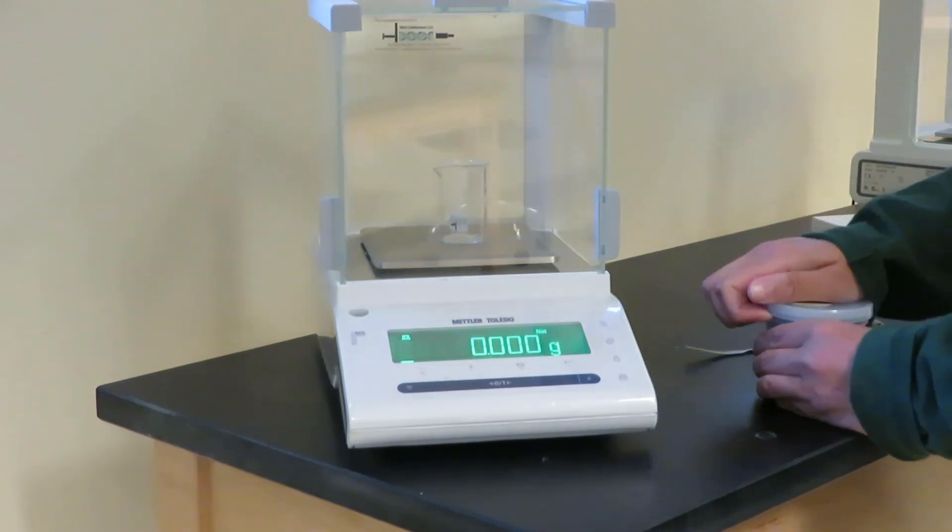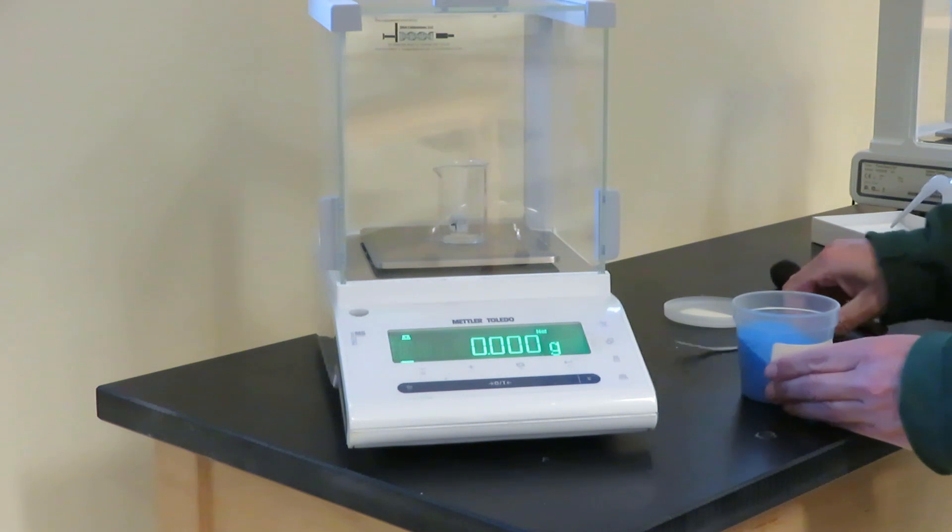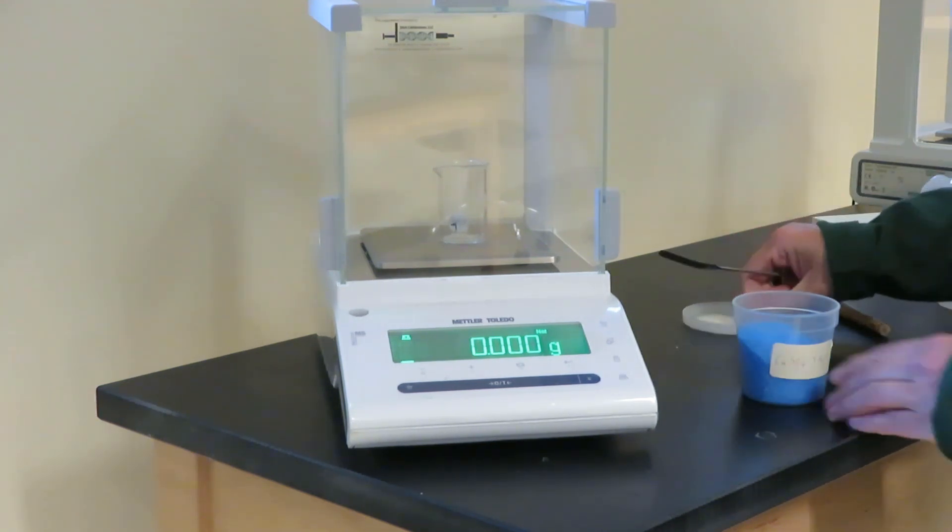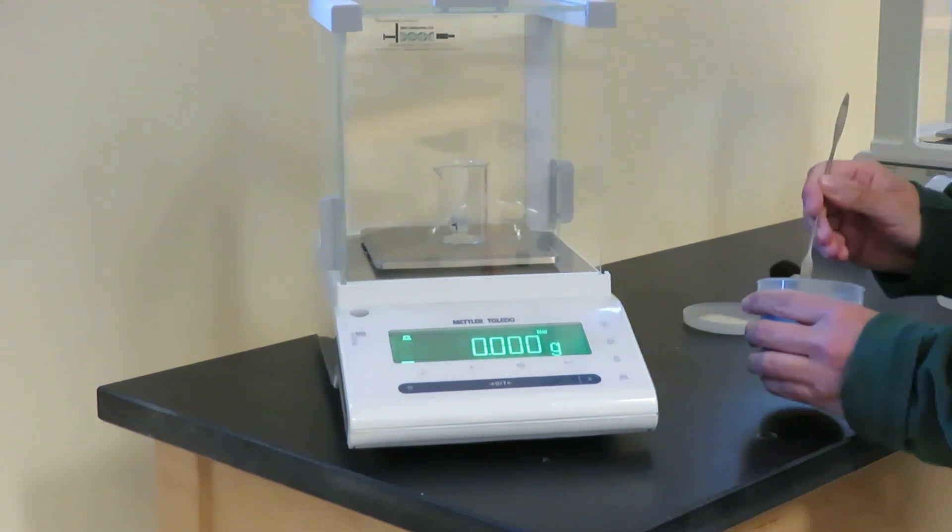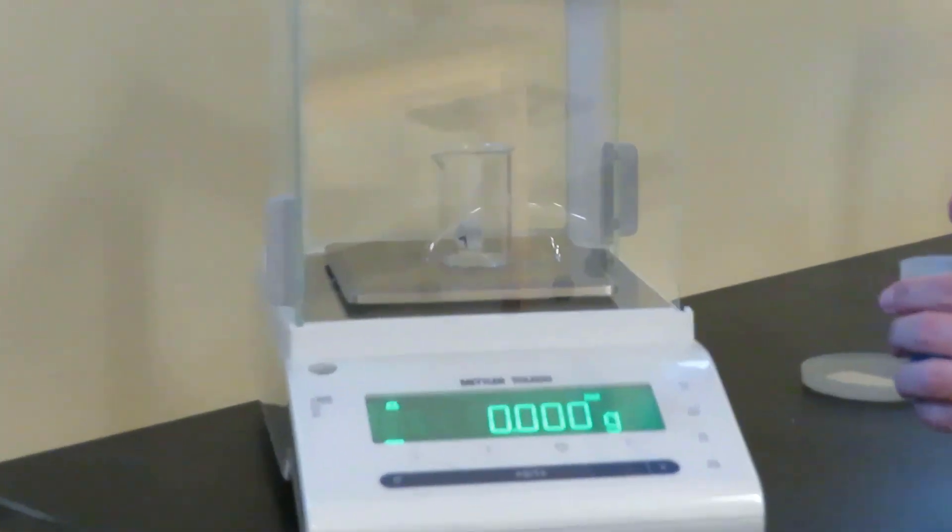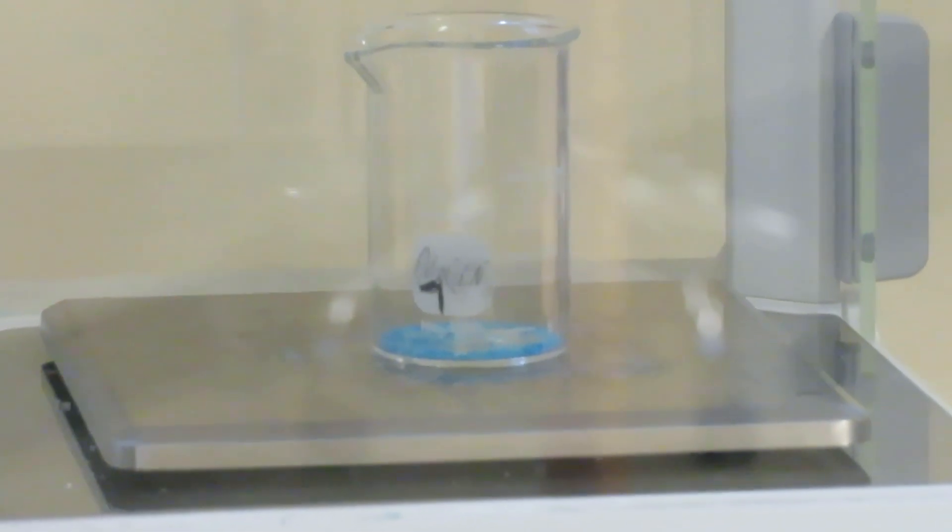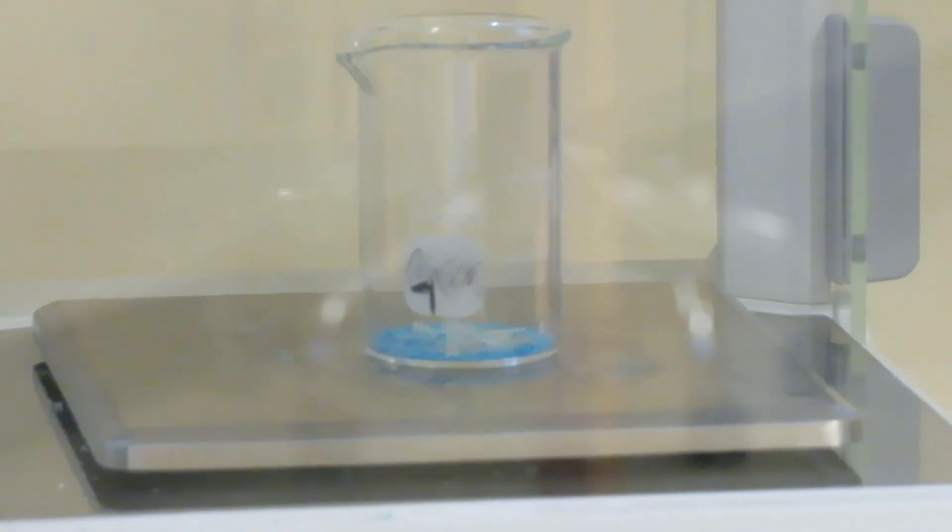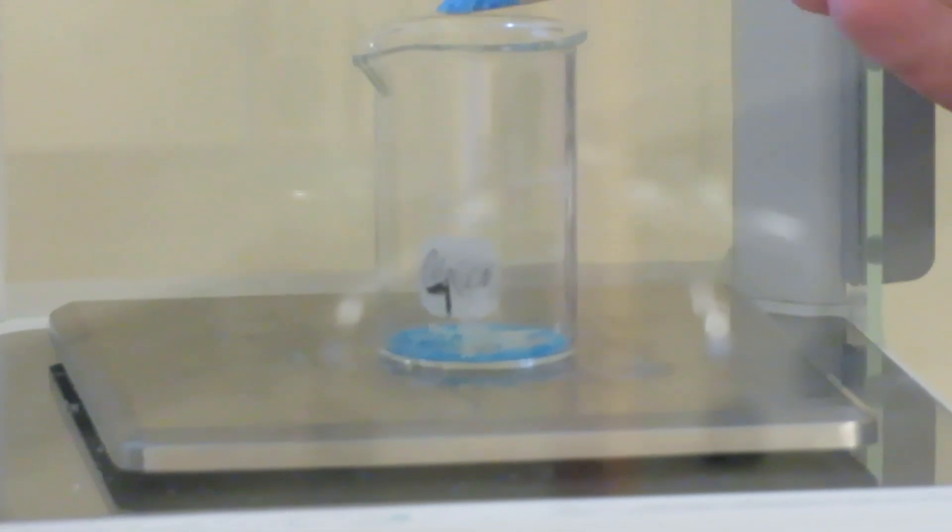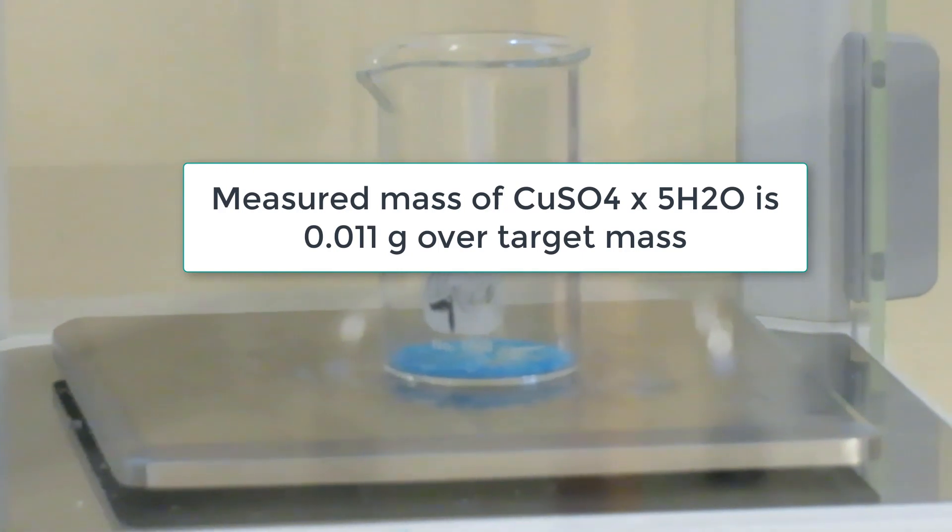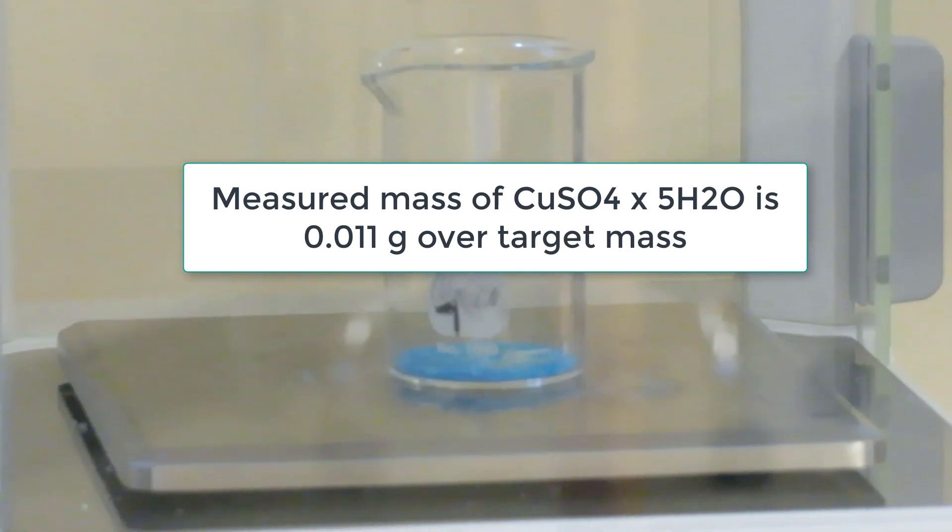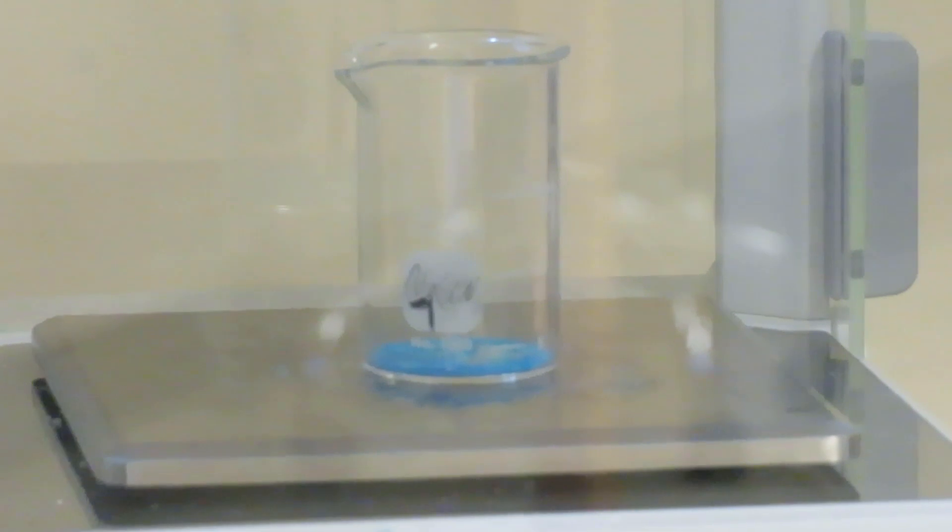I'm going to weigh my copper 2 sulfate solution. The mass is very small, so I'm going to add just a small amount at a time. My final mass is 0.011 grams above my target concentration when I'm done.